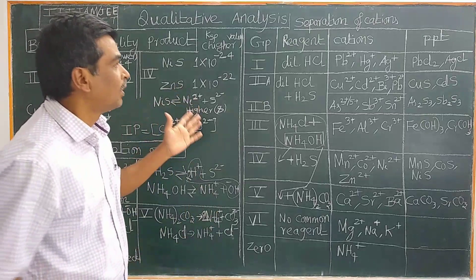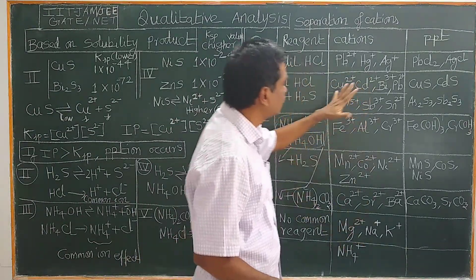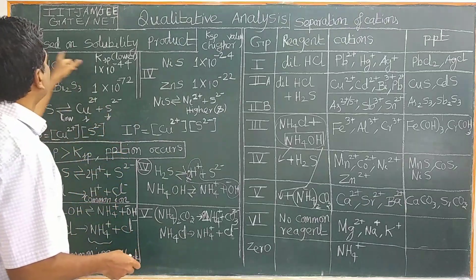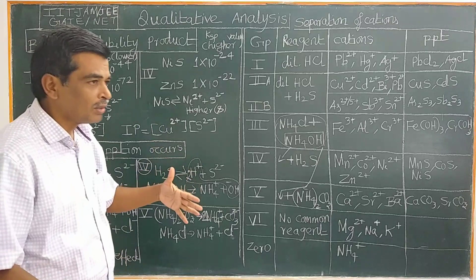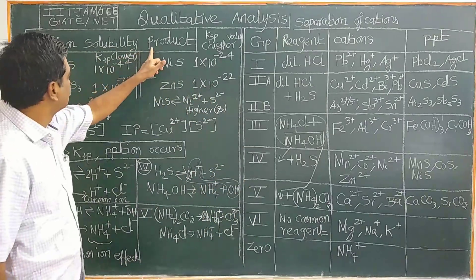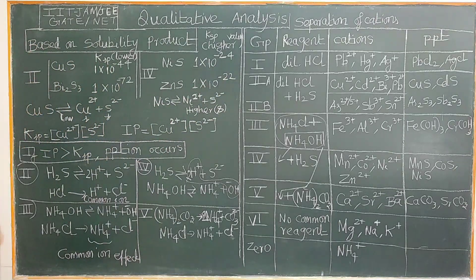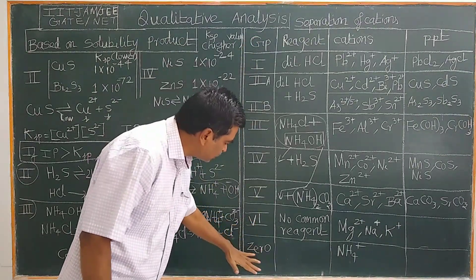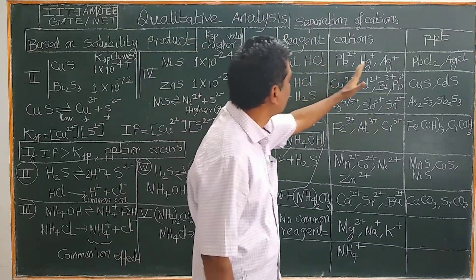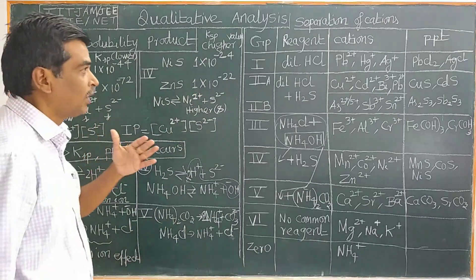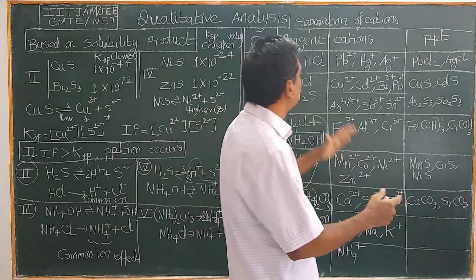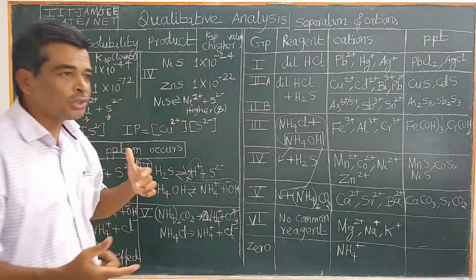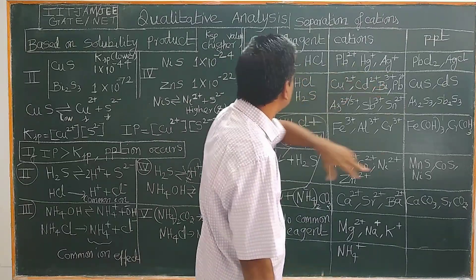For example, you have metal ions — how are they grouped into six groups? The separation of cations is based on the solubility product principle. The first group cations — lead and mercury — are deposited as chlorides. The group reagent used is dilute HCl.